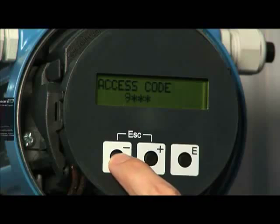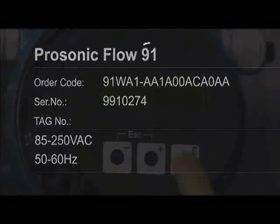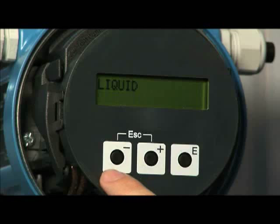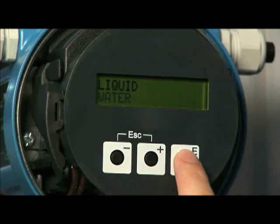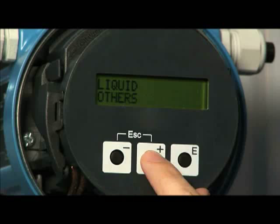The first programming change requires an access code for which the device model number is the default. Then enter the liquid being measured. Various options are available. If your particular liquid is not listed, simply choose the option Others.